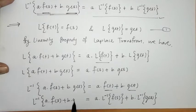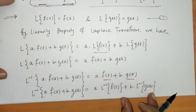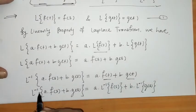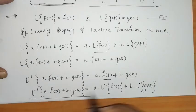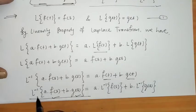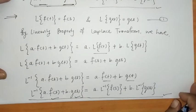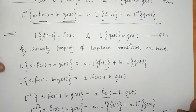So what does this mean? We can operate the inverse Laplace transform separately on F(s) and G(s) — we can distribute L⁻¹ in this way. This is the linearity property for the inverse Laplace transform.